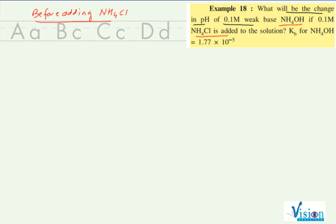If we write the reaction, then the reaction is like this: NH4OH plus H2O gives NH4 plus plus OH minus. If we see other information, what are the other information that has been given to us? They said concentration of weak base, that's C equals to 0.1M, and KB is given.